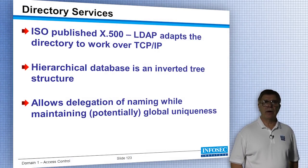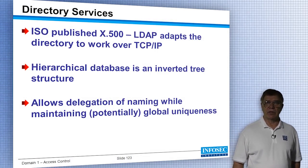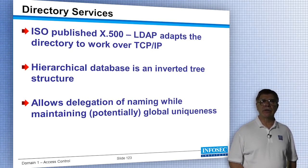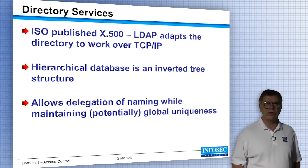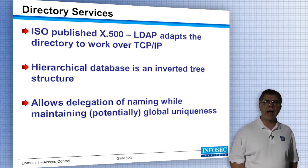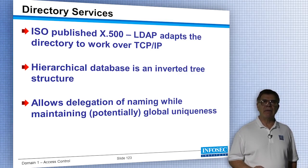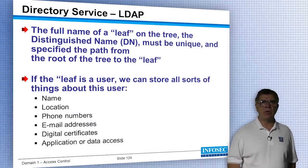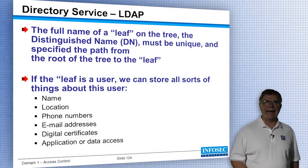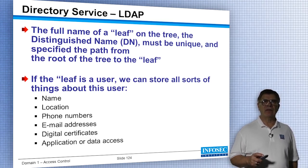With directory services, ISO published X.500, which includes the Lightweight Directory Access Protocol (LDAP) that adapts the directory to work over TCP/IP. Throughout the CISSP course, two ISO X.500 standards matter: X.500 here and X.509 in cryptography — don't confuse them. LDAP is a hierarchical database — an inverted tree structure — that allows delegation of naming and maintains global uniqueness. Following the tree all the way out to the leaf gives you the distinguished name, which is unique, specified from the root all the way to the leaf.